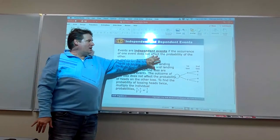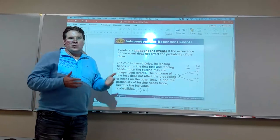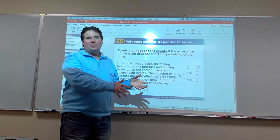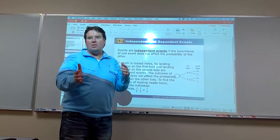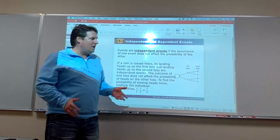Independent events are events that one happening does not affect the next one happening. It's like when you toss a coin. You're going to get heads or tails, but whatever you get on that first one doesn't change the probability of getting heads or tails on the second one. And so those are what we call independent events.